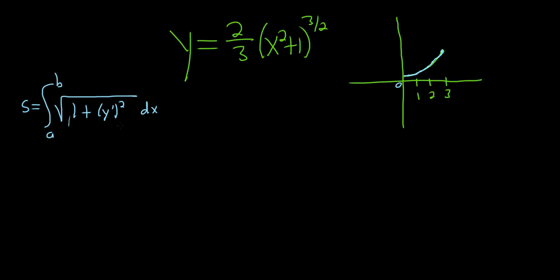We try to rewrite the expression inside the square root in a convenient way. In this problem, a is going to be 0 and b is going to be 3, and this comes just from the picture. We're going to integrate from 0 to 3.